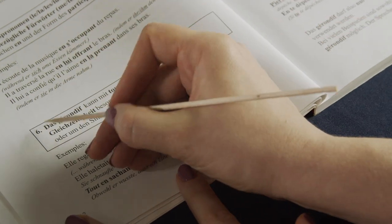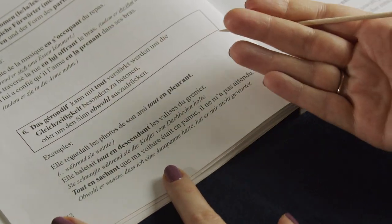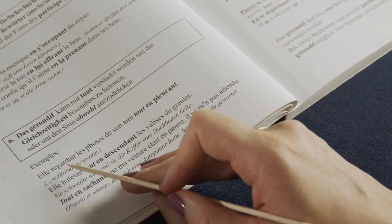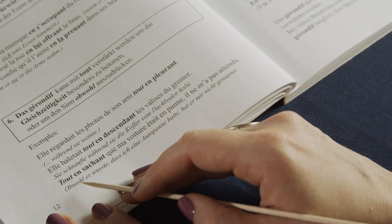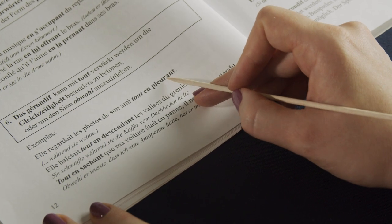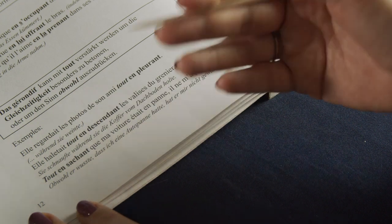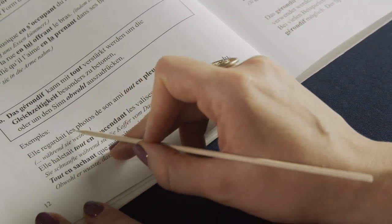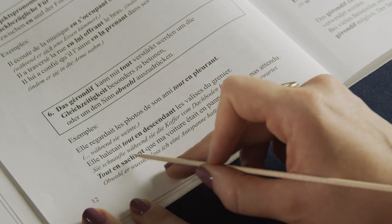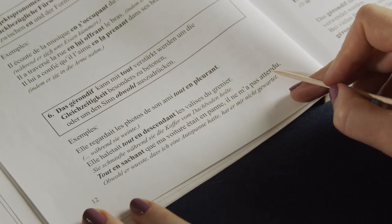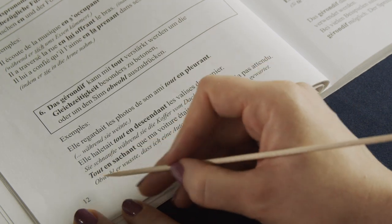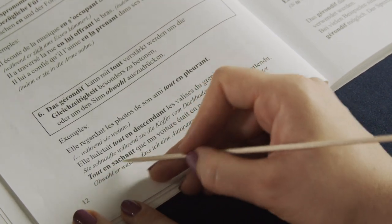And finally, six: if you want to emphasize the gérondif, you can use tout. For example, elle regardait les photos de son ami tout en pleurant. So it can also mean although, basically. It's both an emphasis and a meaning of although. She was looking at the photos of her friend even though she was crying. Or tout en sachant comment vas-tu retomber, il ne m'a pas attendu. Even though he knows that my car wasn't working, he didn't wait for me. So again, you have the emphasis tout en sachant.